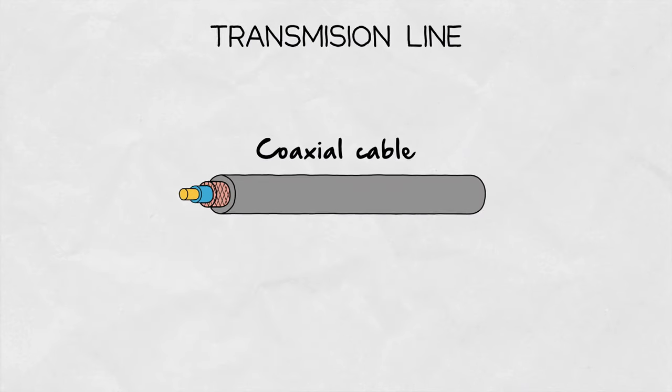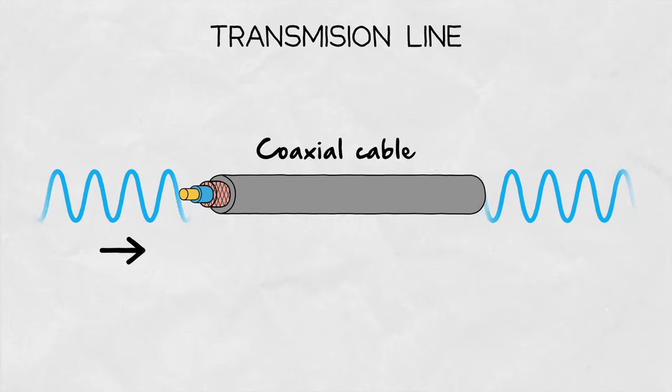A waveguide is a type of transmission line, like a coaxial cable. It allows electromagnetic energy to travel through it and transport from point A to point B.